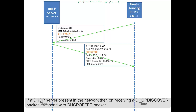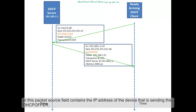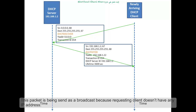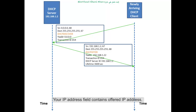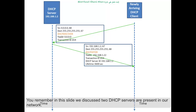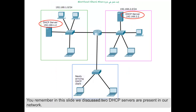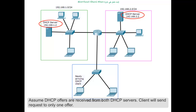If a DHCP server is present in the network, upon receiving a DHCP Discover packet it responds with a DHCP Offer packet. In this packet, the source field contains the IP address of the device sending the offer. This packet is sent as a broadcast because the requesting client doesn't have any IP address yet. The 'Your IP address' field contains the offered IP address. Then transaction ID, DHCP server ID, and lifetime fields are also present.